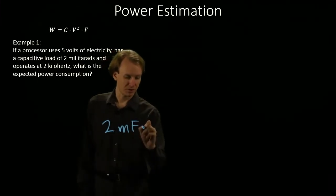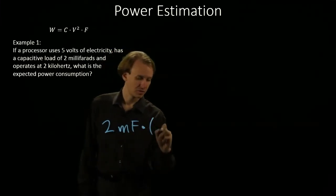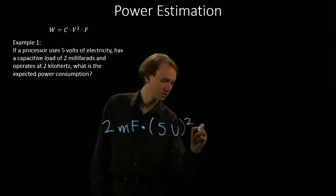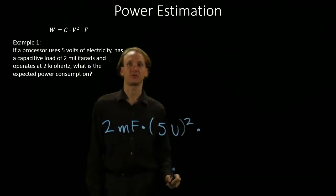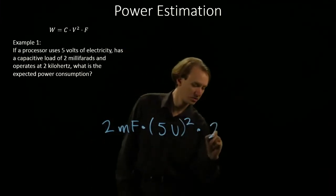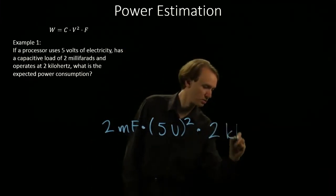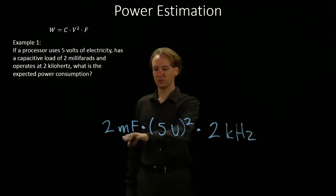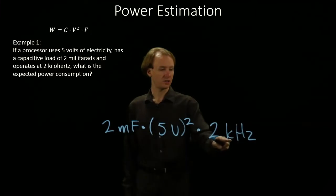we multiply that by our voltage squared, as well as our switching frequency to kilohertz. So the first thing that we'll want to do is get rid of the milli and the kilo.